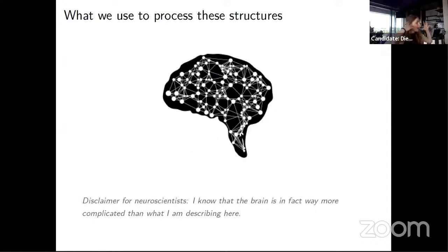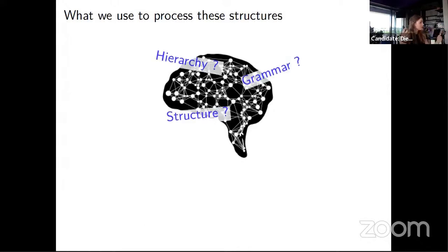Very oversimplistically put, the human brain is an extremely large connection of neurons that are communicating with each other, and how these neurons together represent things like hierarchy, grammar, or structure is really kind of unclear.